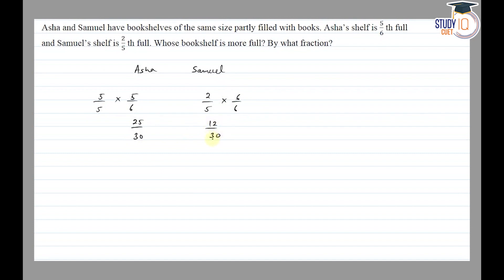So now we can compare since the denominator is the same number. 25 is greater than 12, so Asha's bookshelf is more filled than Samuel's bookshelf.